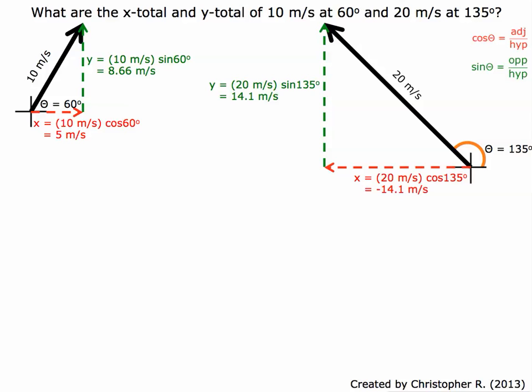Now we're going to calculate the x total. We're going to add 5 meters per second plus negative 14. When you do that, you get negative 9.1 meters per second. If we draw that out, the negative is going left. We're going to do the same thing with the y totals. 8.66 plus 14 gives us 22.8 meters per second. We've drawn these and we're going to draw the tip to the tail.